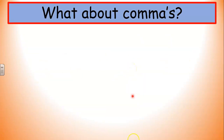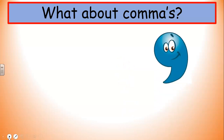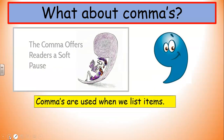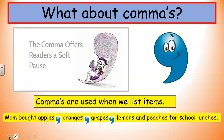How about commas? You also have to use commas — they also punctuate sentences. The comma offers readers a soft pause. And commas are also used when we list items. For instance, look at this example: 'Mom bought apples, oranges, grapes, lemons.' Then we also have peaches in that list, but because there is an 'and', we don't need the comma there. Where we put the 'and', the 'and' and the comma do not go together. So: 'Mom bought apples, oranges, grapes, lemons, and peaches for school lunches.'